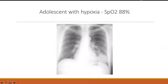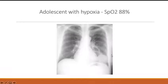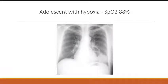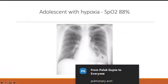This is an adolescent with hypoxia — saturation of 88% — but without respiratory distress. On the X-ray, the cardiothoracic ratio is normal, pulmonary vascularity appears normal, but there is opacification in the lower lobe. Given that the patient is cyanotic, we can consider pulmonary AV malformation.